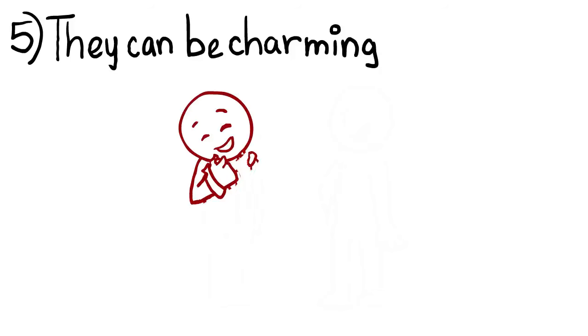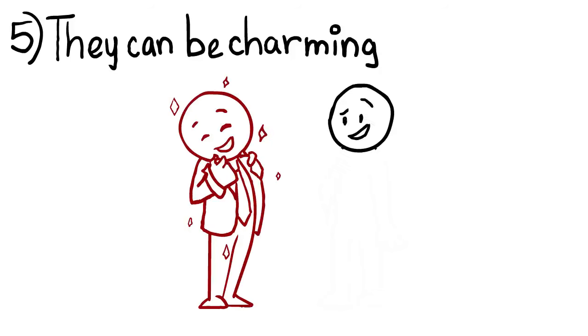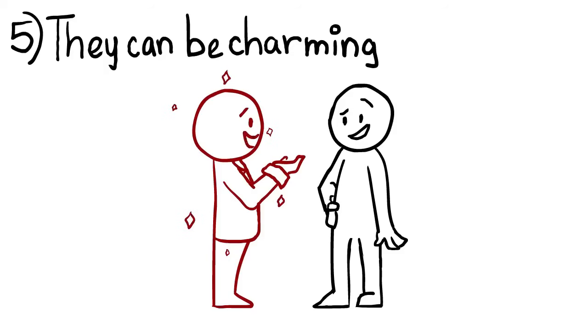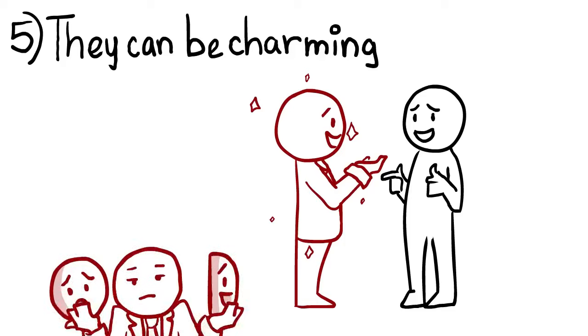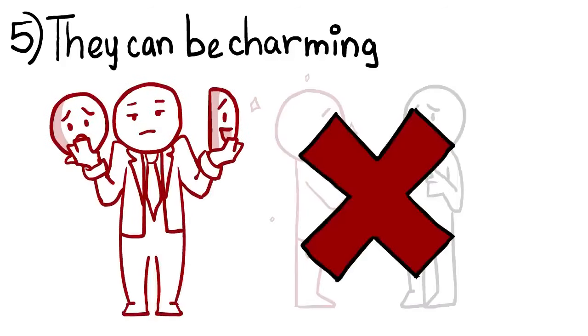5. Psychopaths Can Be Charming. When a psychopath approaches a victim, he or she will often seem incredibly charming. But the more sensitive and wary individuals will note that there is something wrong or off about this charm. It just doesn't seem right. That's because it's all an act, and the psychopath doesn't actually care about you.